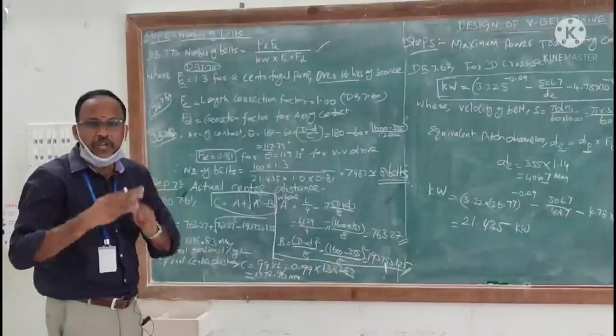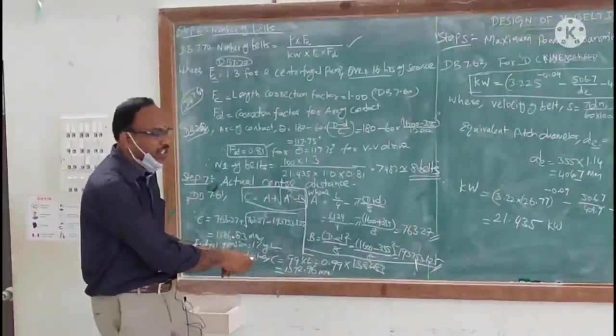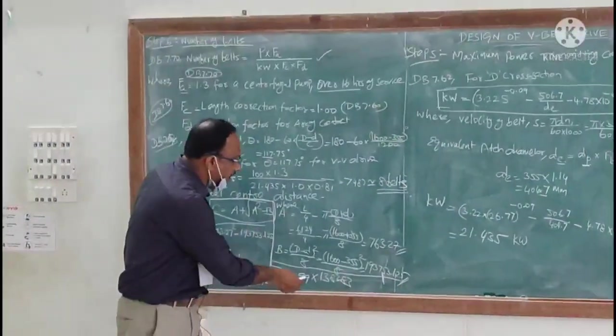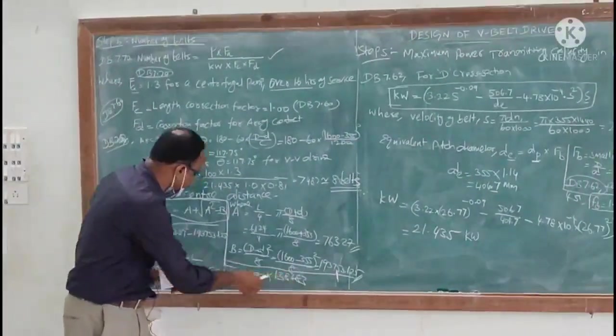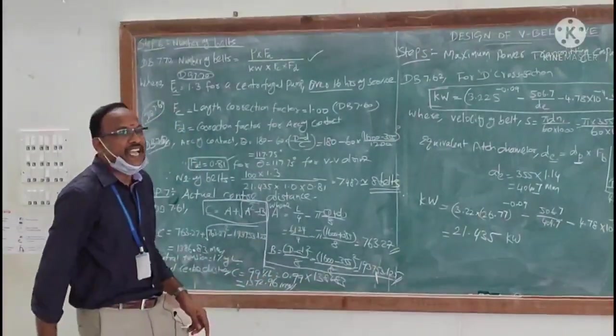For our V-belt design, we like to include or consider the initial tension. Here one percentage of length we have to reduce, then we can give the initial tension. So the final center distance is nothing but 99 percentage of length is considered. So 0.99 times 1386, we can get the final length as 1372.96 millimeter.